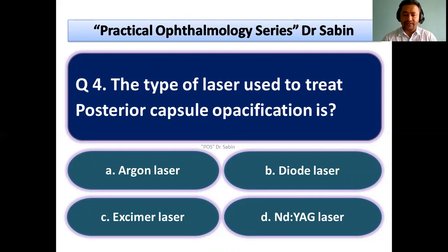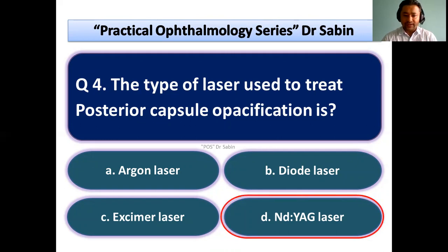The type of laser used to treat posterior capsule opacification — this is also a straightforward question; answer is Nd:YAG laser. That's why we usually say Nd:YAG laser capsulotomy. Other lasers like argon laser are used for retinal photocoagulation.